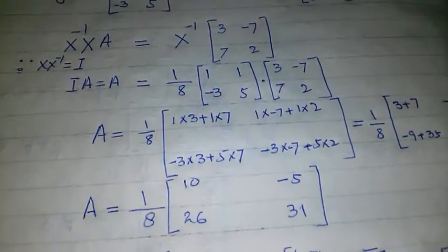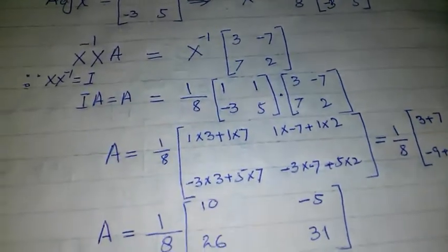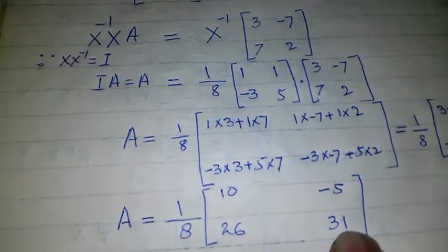On simplifying, we get [10/8, -5/8; 26/8, 31/8].